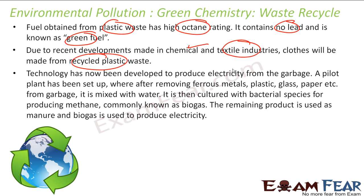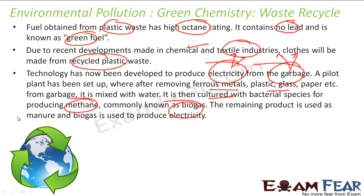There is also a provision for producing electricity from garbage. We have tons of garbage and a shortage of electricity. You can take the garbage, remove metals, plastic, and paper, culture it with some bacteria to produce methane gas, and use that methane gas to produce electricity. This way, garbage — which is a pollutant — becomes a resource, and you save coal, finding a useful sink for this pollutant.